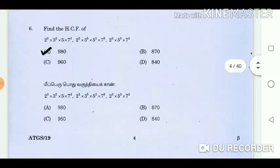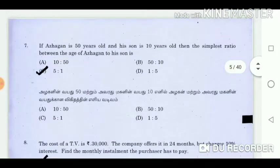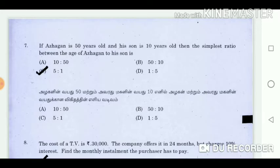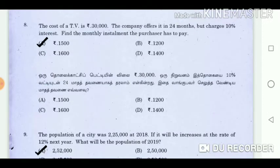Question 6: Find the HCF. Answer: 980. Question 7: If Aalagan is 50 years old and his son is 10 years old, then the simplest ratio between the age of Aalagan to his son is answer 5 is to 1. Question 8: The cost of a TV is Rs. 30,000. The company offers it in 24 months but charges 10% interest. Find the monthly instalment the purchaser has to pay. Answer: Rs. 1,500.